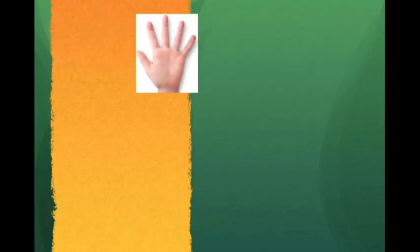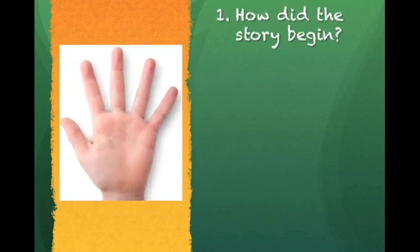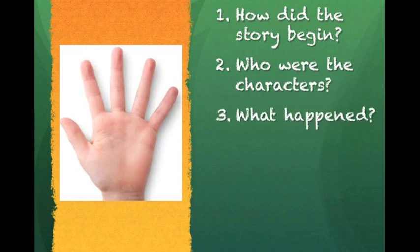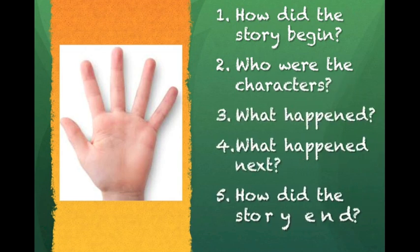When we start to retell a story, we want to remember five things. First, how did the story begin? Second, who were the characters? Third, what happened? Fourth, what happened next? And five, how did the story end?